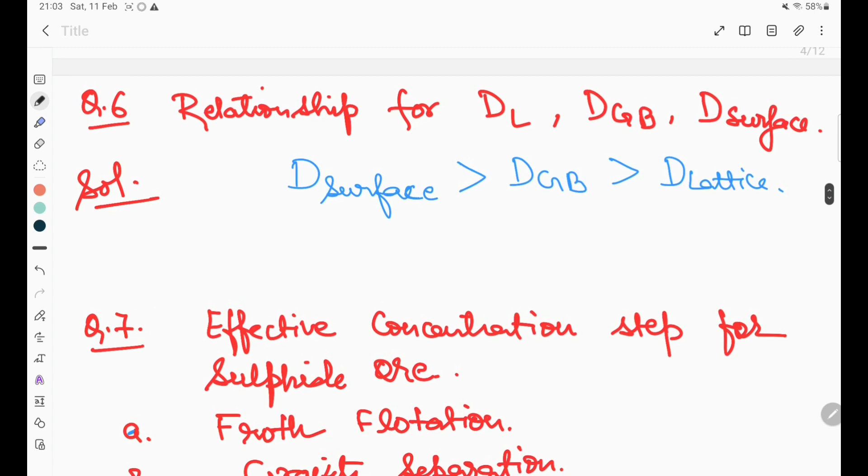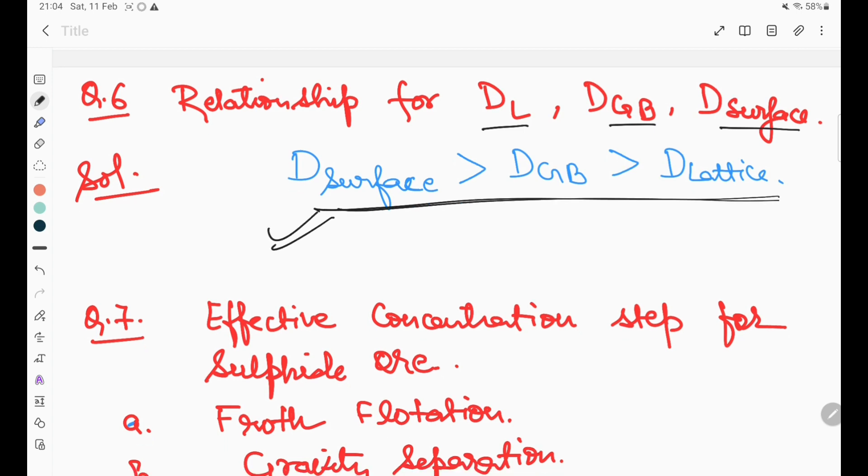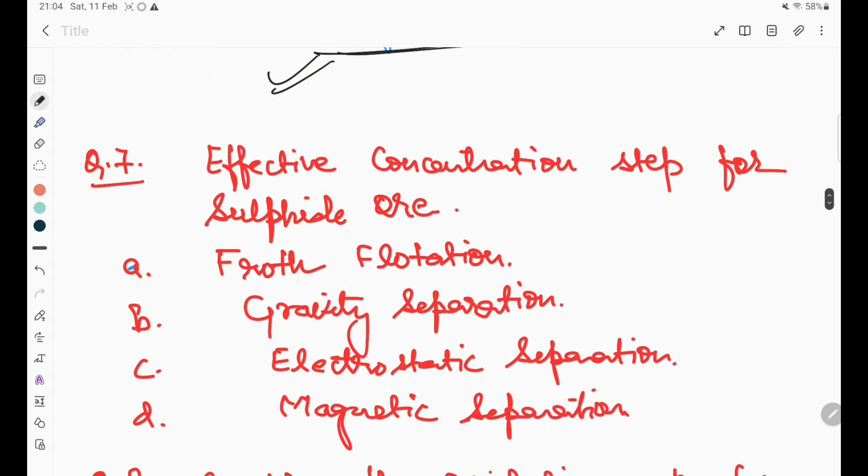The next question is about the relationship for diffusion coefficient for lattice, grain boundary, and surface. This is the right relationship. Question number seven: effective concentration step for sulfide ore is the right answer, froth flotation.